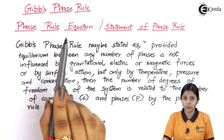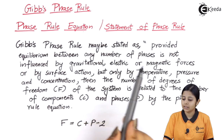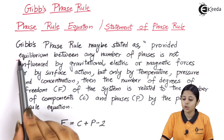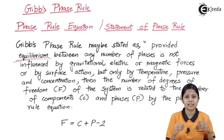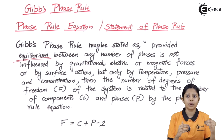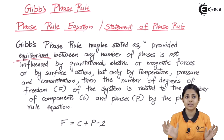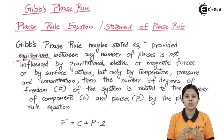Gibbs phase rule may be stated as: provided equilibrium. When we talk about any chemical system, we have an equilibrium for it. Let's take a reaction — Na plus Cl forming NaCl. At equilibrium, we will have a certain amount of Na and Cl present on the reactant side, and NaCl present on the product side. The amount on the reactant side should equal the amount of product NaCl, and both these amounts should remain constant for a very long period of time. That is known as equilibrium.